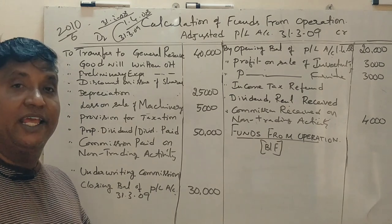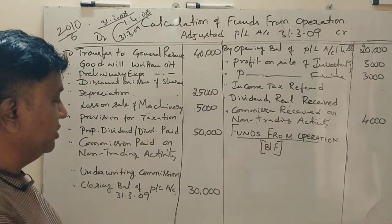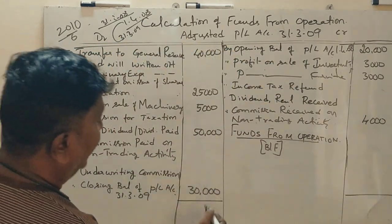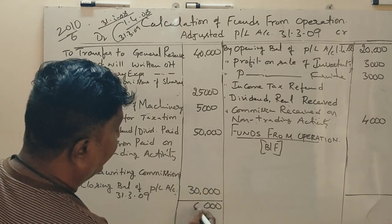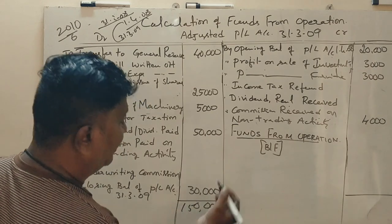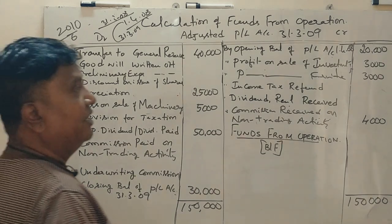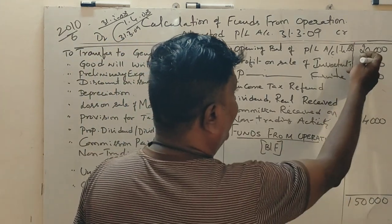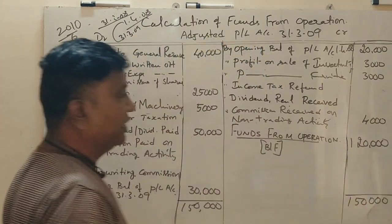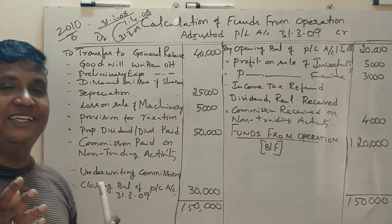You are required to calculate funds from operations. Debit side and credit side totals come to Rs. 1,50,000 each. The difference gives funds from operations of Rs. 20,000.